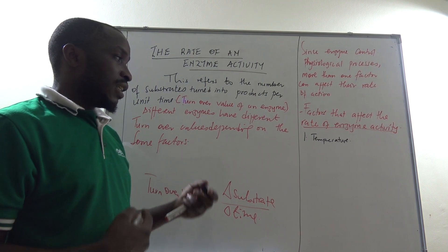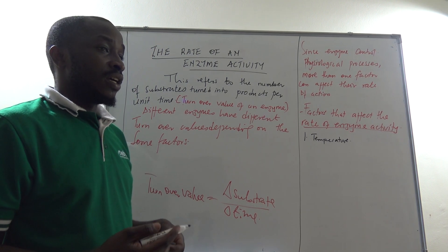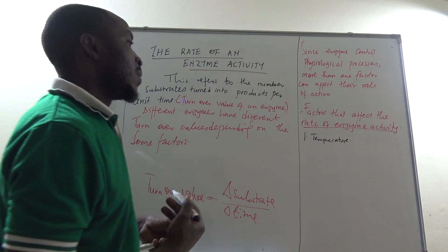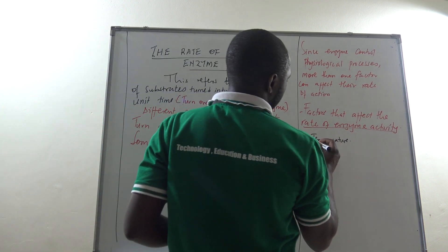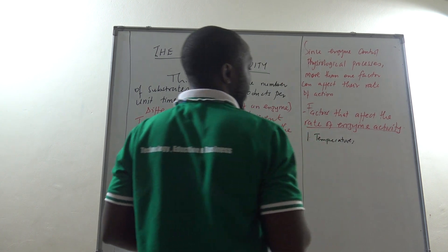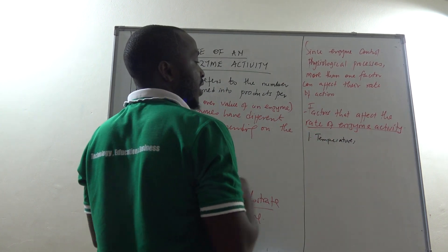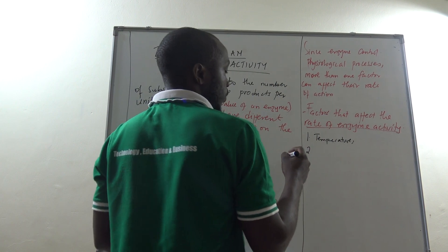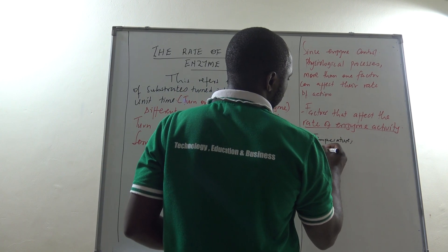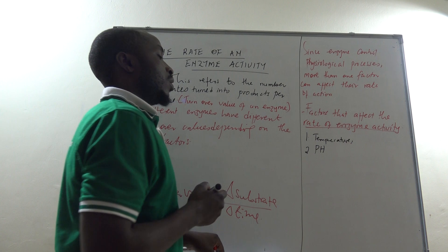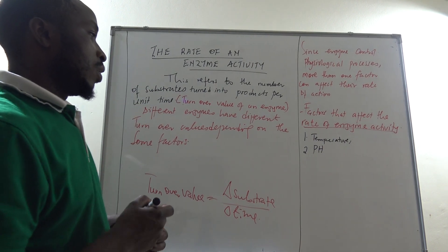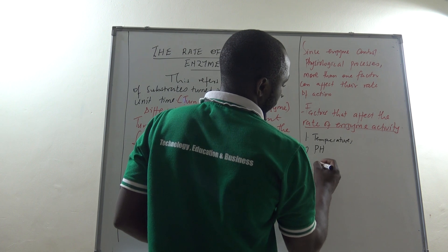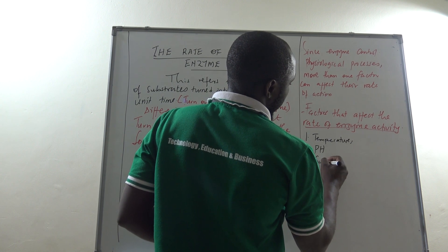We already know something: since an enzyme is a protein in nature, proteins can be denatured or activated by different temperatures. We shall expand this more looking at physiological graphs. Factor two is pH, which will also affect enzyme activity. Factor three is substrate concentration.